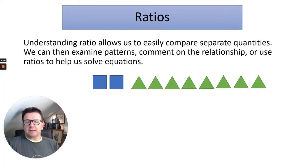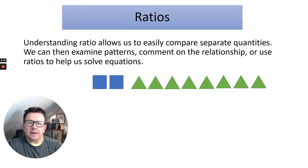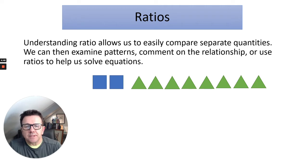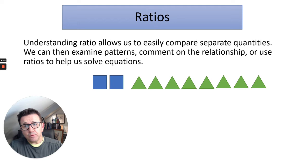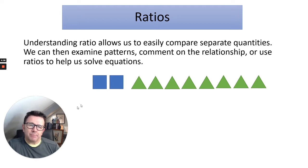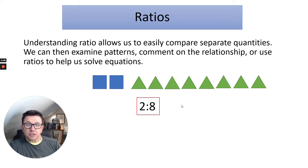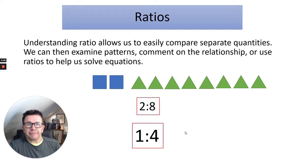So first of all, ratios. Let's look at how we work them out. We need to easily compare separate quantities so we can examine patterns, comment on the relationship, or use ratios to help us solve equations. Here's an example: I've got two blue squares and eight triangles, so I could show that as a ratio of two to eight, and I can simplify that down further to one to four.